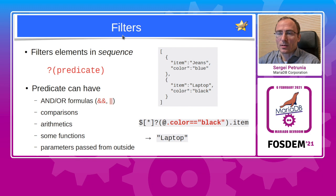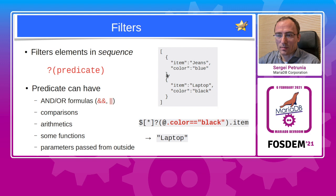After each step, optionally there can be a filter. I mentioned that we get a sequence of elements — filter allows to filter out elements of that sequence. The syntax is a question mark followed by a predicate. The predicate can be a formula, a logical AND/OR formula, with comparisons of constants and elements, arithmetic, certain functions supported, and you can refer to parameters passed in from outside. For example, given a JSON document with two objects, you can select all members of the array, then keep only those where the member 'color' equals 'black', and then add another step to select the member named 'item' — getting just the value 'laptop'.